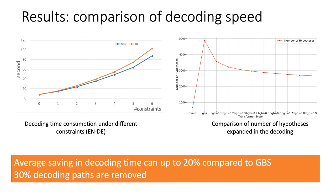We continue to check the results. The left figure compares speed regarding the number of constraints. We divide sentences into different groups according to constraint count and then average the decoding time. We can see that when the number of constraints increases, the speed gap enlarges between GBS and HGBS. The right figure shows the average number of hypotheses in the grid beam search space. There is a significant decrease between GBS and HGBS. After using source information to prune hypotheses in the GBS, our HGBS method has greatly decreased decoding time, especially when sentences contain more than three constraints.